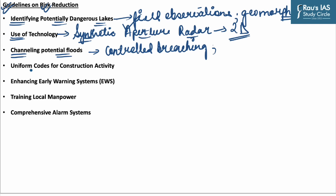There is also a need to develop a broad framework for infrastructure development, construction, and excavation in vulnerable zones, and to promote uniform codes for construction activity. One important challenge is that the number of implemented and operational glacial lake outburst early warning systems is very small even at the global scale. The need is to enhance early warning systems. The NDMA has also emphasized training local manpower, as 80% of search and rescue is carried out by the local community before state machinery intervenes.